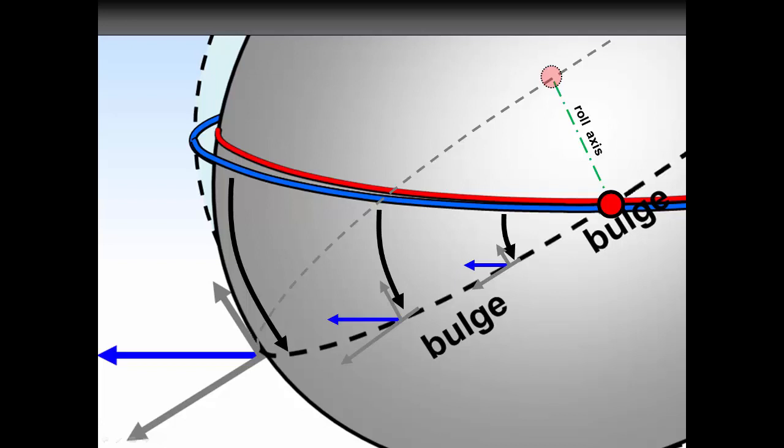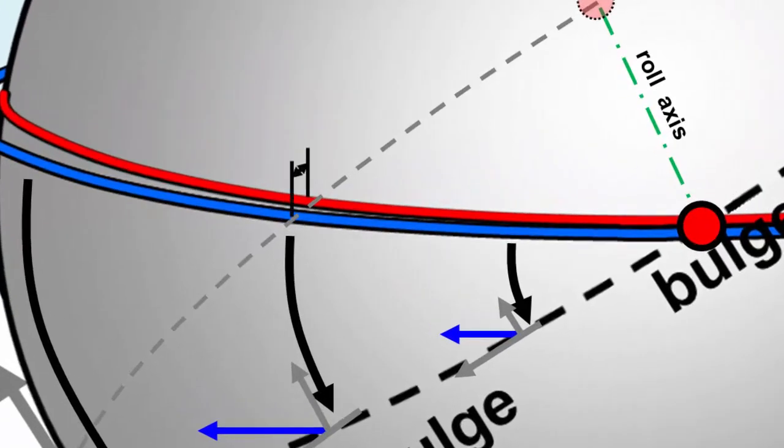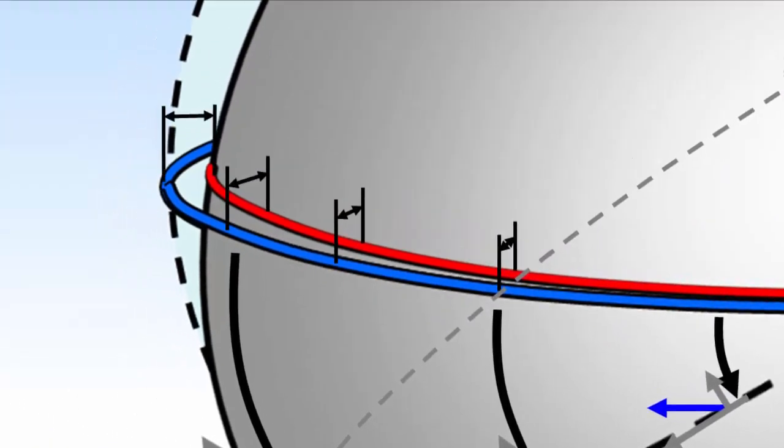The blue line represents the distance the mantle would deform to reach equilibrium and reform a new bulge at the new equator. Now notice that since the bulge did not tip away at the roll axis, there is no centrifugal force, no stress, and therefore no displacement of material. However, as we travel along the surface of the equator away from the roll axis, the displacement to equilibrium distance increases to a maximum, again directly under the Himalayan mass concentration.